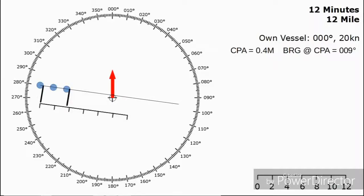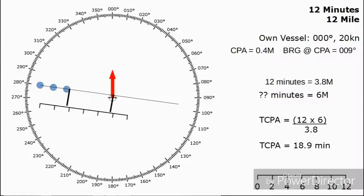Now we want to measure how far the dots have traveled in 12 minutes. We can see they covered 3.8 miles relative in 12 minutes and they've still got 6 miles to go. Now that 3.8 relates to 6 in the same way 12 relates to the time to the closest point of approach. We can complete a little bit of algebra to work out the TCPA, which is going to be 18.9 minutes.